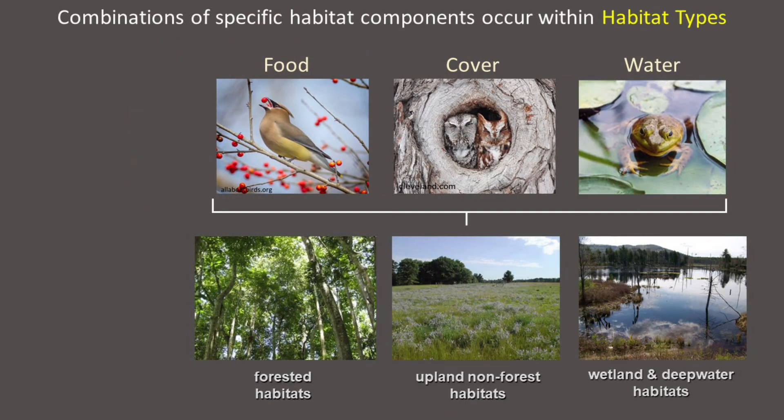Within every landscape, predictable combinations of specific habitat components occur within different habitat types. In New England, we have three basic habitat types: forested habitats, upland non-forest habitats such as fields and pastures, and wetland and deepwater habitats. Differences in the soil type, the amount of water, and in the type and structure of vegetation among these habitat types result in differences in the specific types of food, cover, and water found in each habitat.